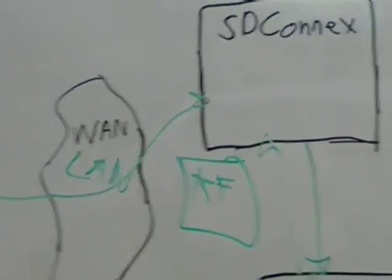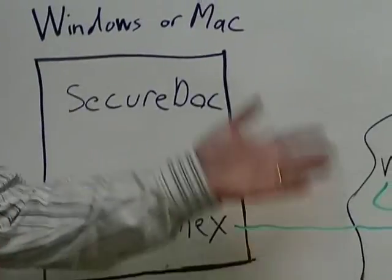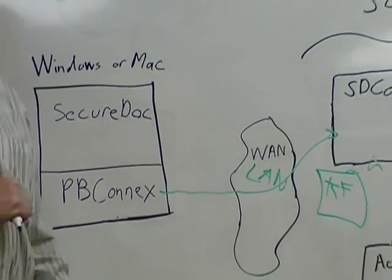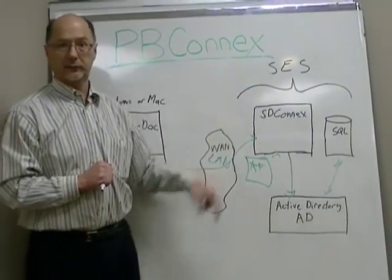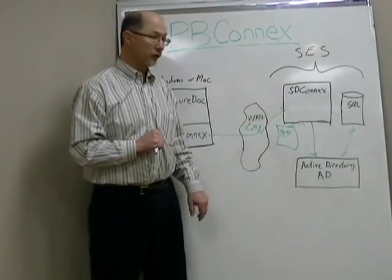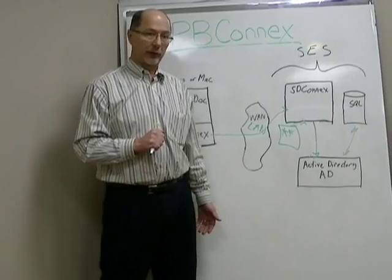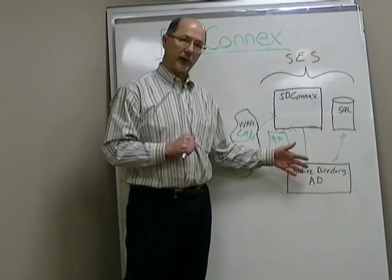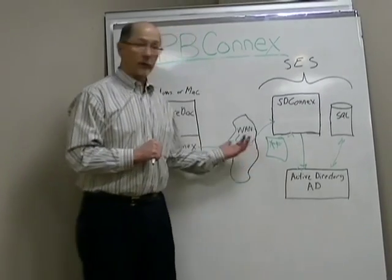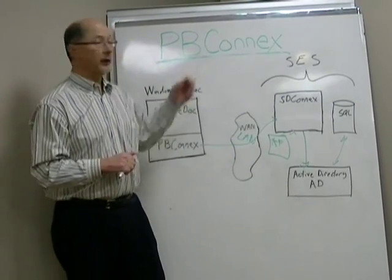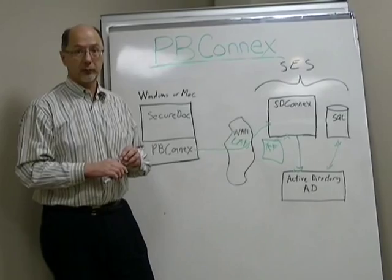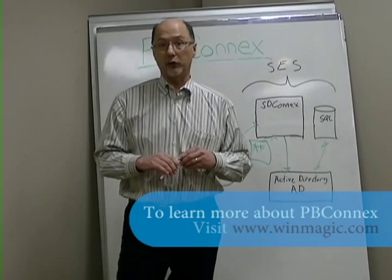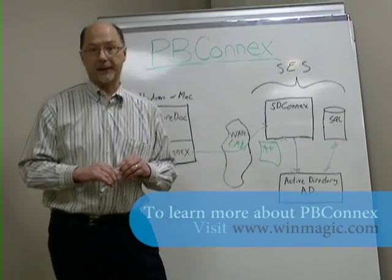The machine boots up and they're off and running. We were able to add a new user to a machine without any involvement of the SES administrator, thus greatly reducing the operational load on the organization to add users. That's one illustration of how PB Connects reduces total cost of ownership. If you'd like to learn more about PB Connects, please see us at www.WinMagic.com. Thank you.